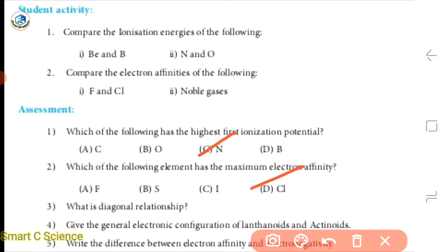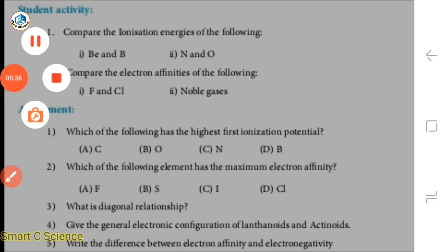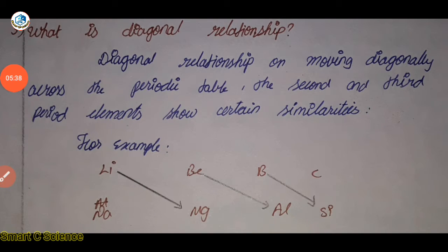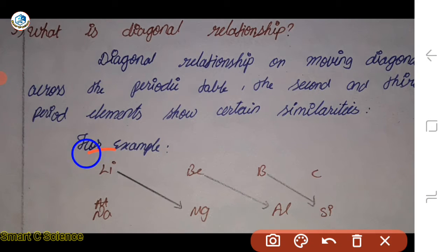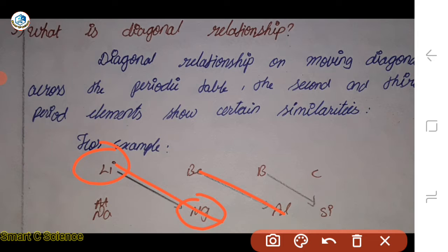What is the diagonal relationship? The diagonal relationship involves cross lines moved from the second and third periods. The properties are similar along the diagonal relationship in the periodic table.